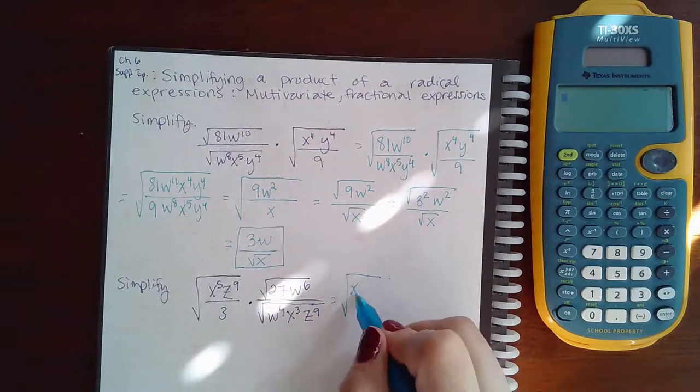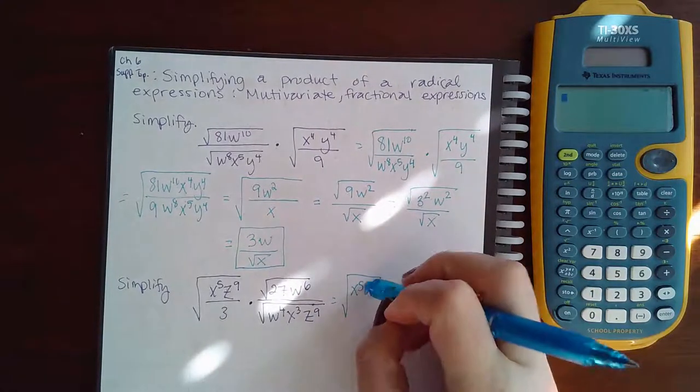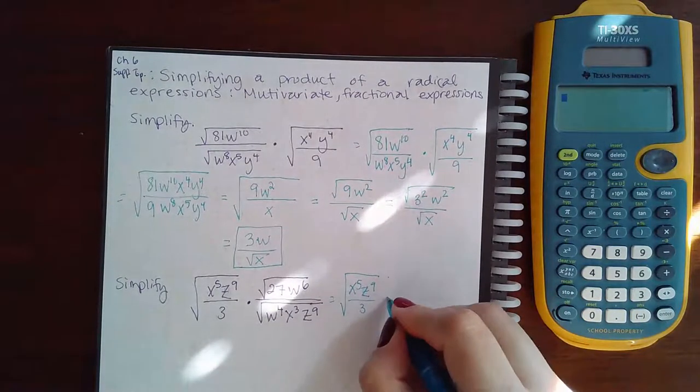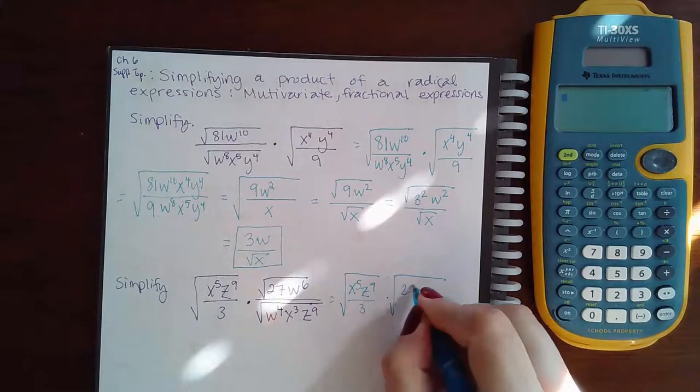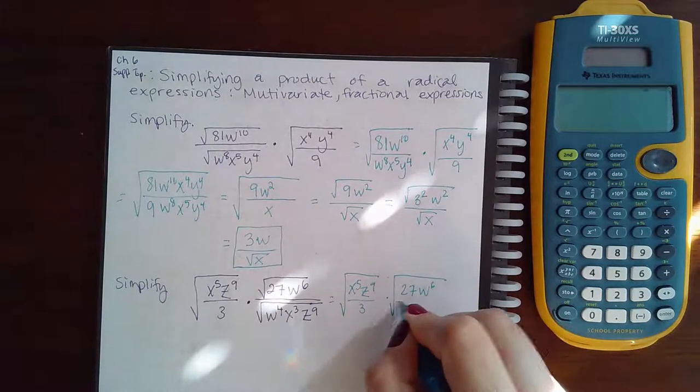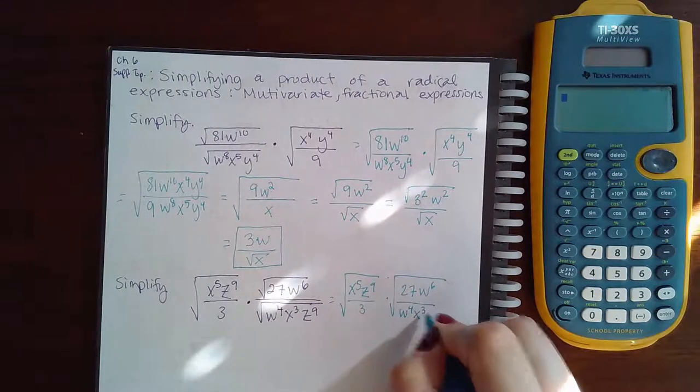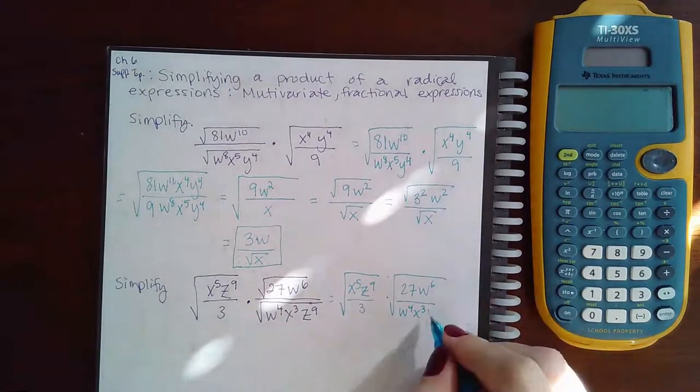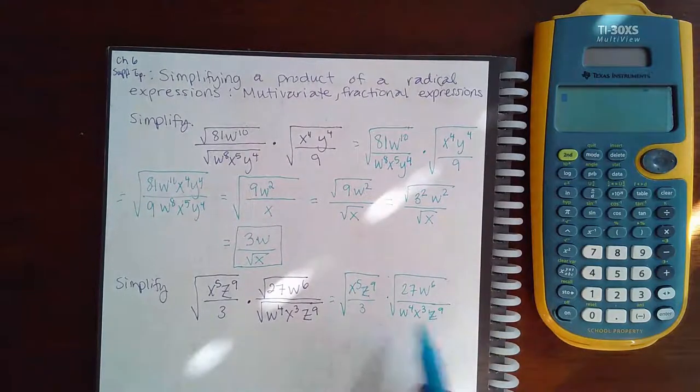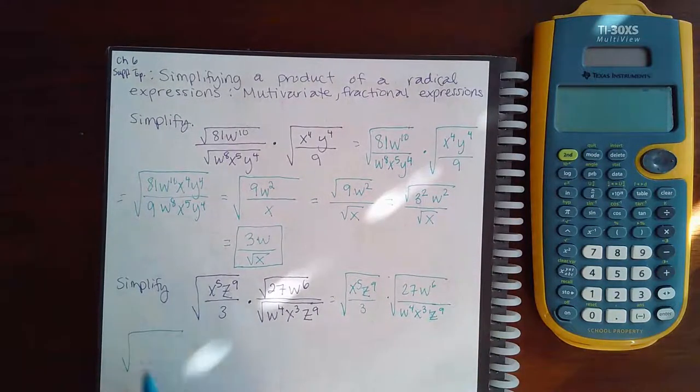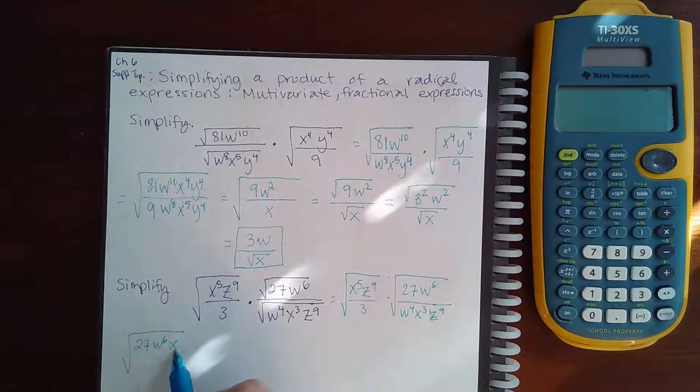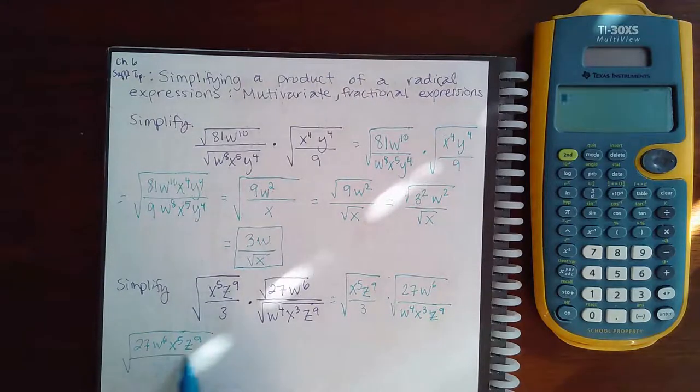Here, same thing. We're going to rewrite that second fraction as one giant fraction, so we have 27w to the 6 over w to the 4 x to the 3 z to the 9. Then we're going to multiply the two things together, so I get 27w comes first, then x and then z. In the bottom I'm going to have the number 3, then the w's, then the x's, and then the z's.